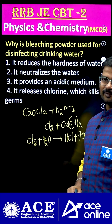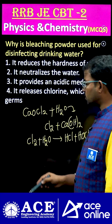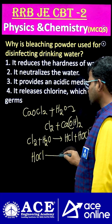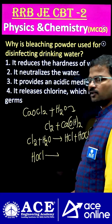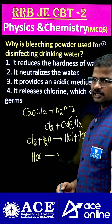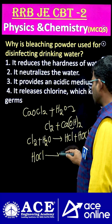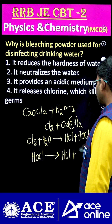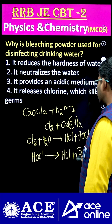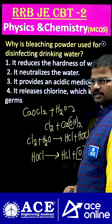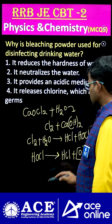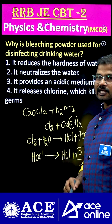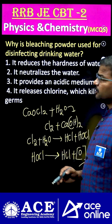The stability of hypochlorous acid is not that good. HOCl, hypochlorous acid, is unstable. Due to that, it can dissociate into HCl and nascent oxygen. So this nascent oxygen is responsible for the killing of germs in the drinking water.